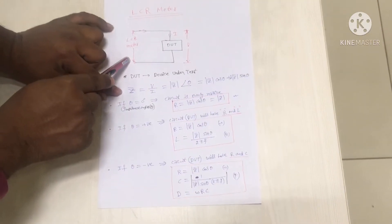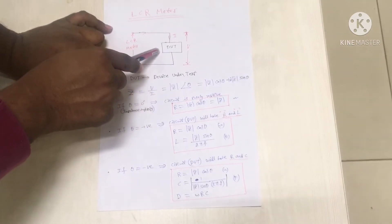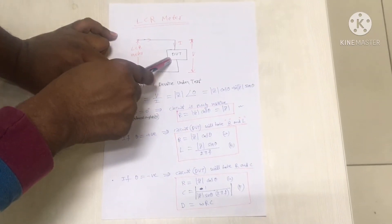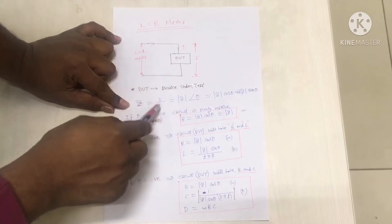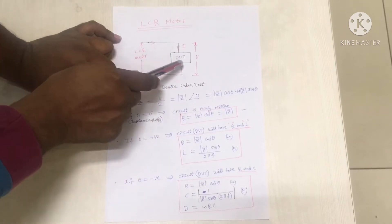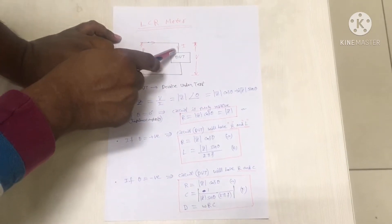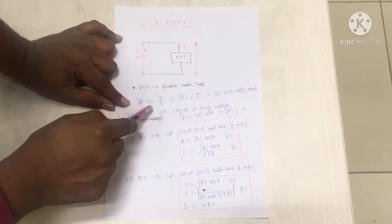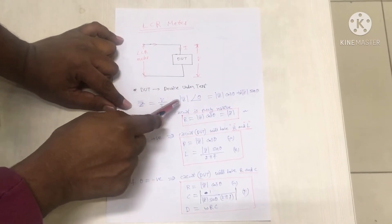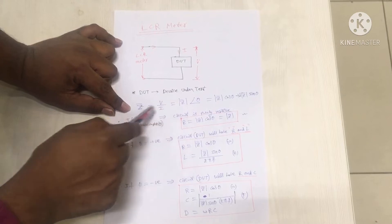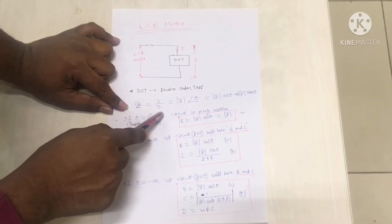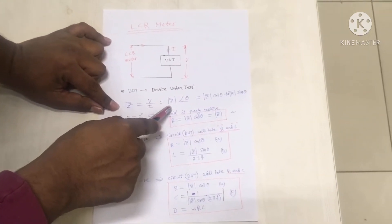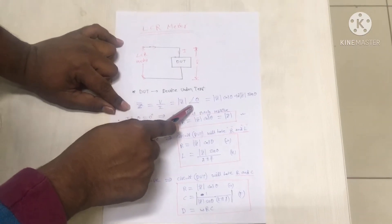In this LCR meter, the LCR meter will give the AC supply to the DUT. Then it will measure the voltage and AC current passing through this DUT, so that it will get the impedance, which is equal to the V by I ratio. Impedance has magnitude and angle in polar form.